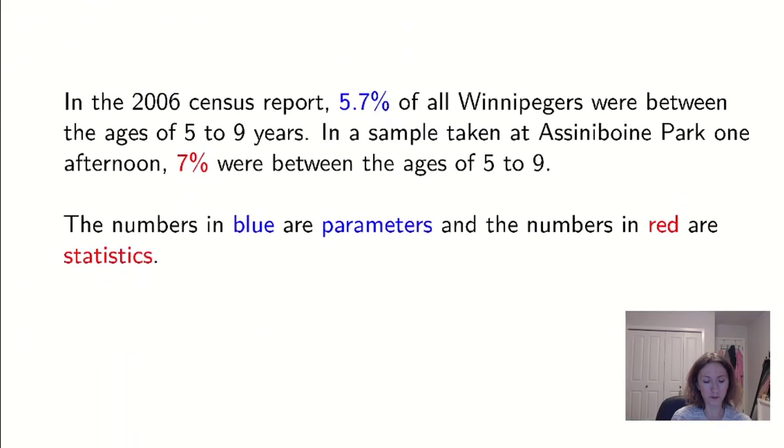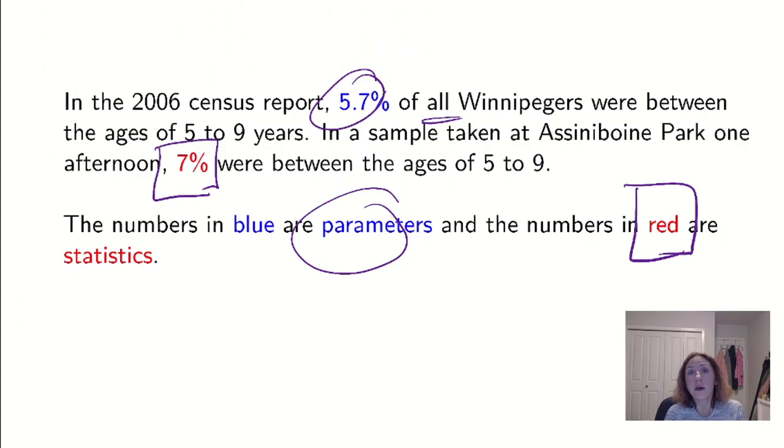So a very small example: the 2006 census reported 5.7 percent of all Winnipeggers were between the ages of five to nine. If a sample taken at Assiniboine Park one afternoon found seven percent were between the ages of five to nine, we would call this 5.7 to be a parameter and the seven percent, because it's only about a sample who were at the park, is going to be a statistic. The number about the sample is a statistic, the number about all Winnipeggers—'all' being the key, that's how I know this is about my population—that's going to be my parameter.